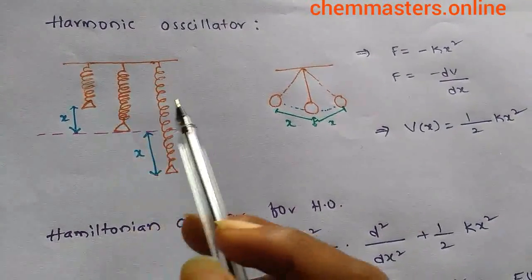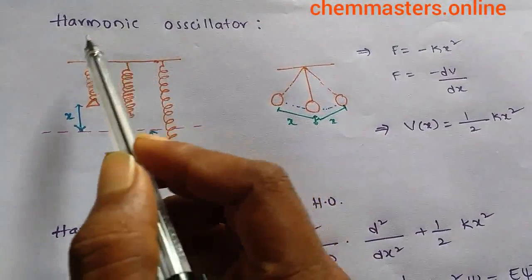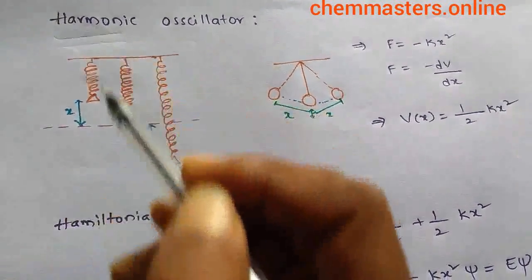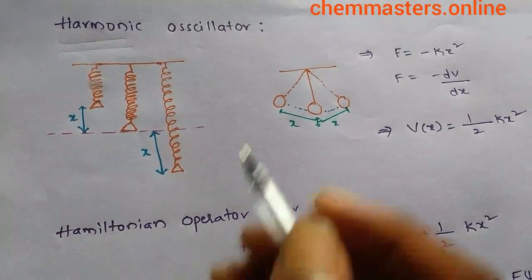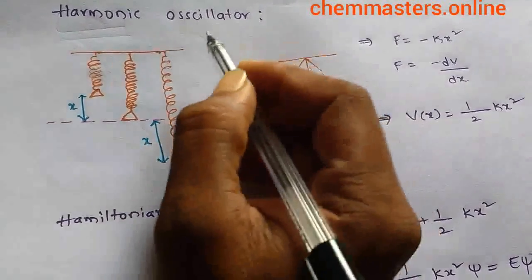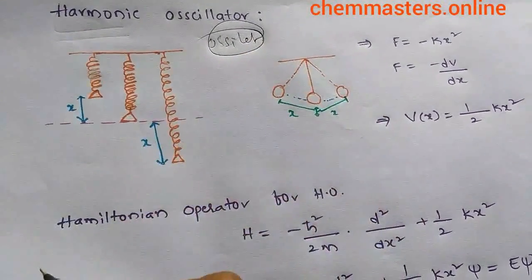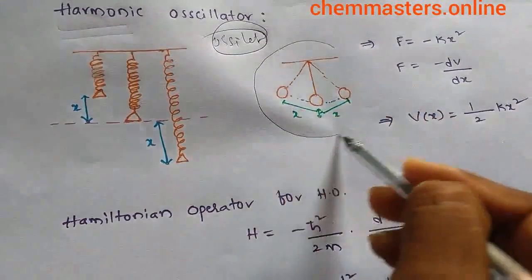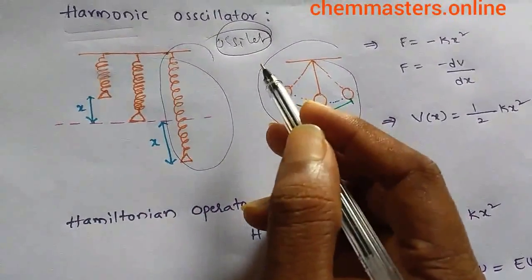We are going to discuss the harmonic oscillator, which is very important for CSR and GATE examinations. Harmonic oscillation arises when a system contains a part that undergoes oscillatory motion — for example, consider a pendulum or a spring.